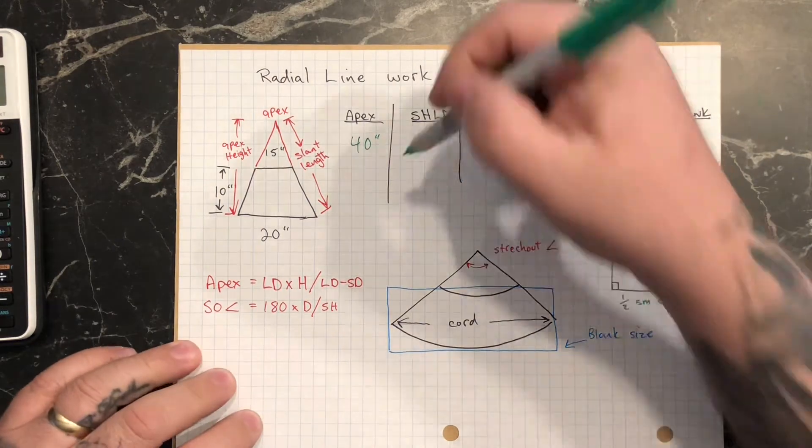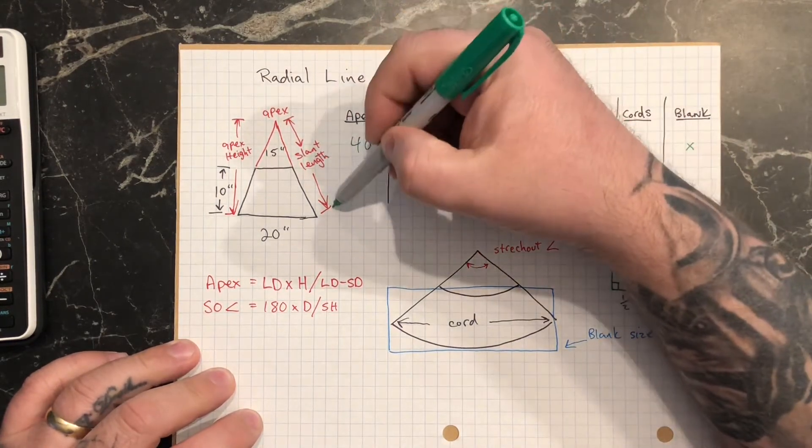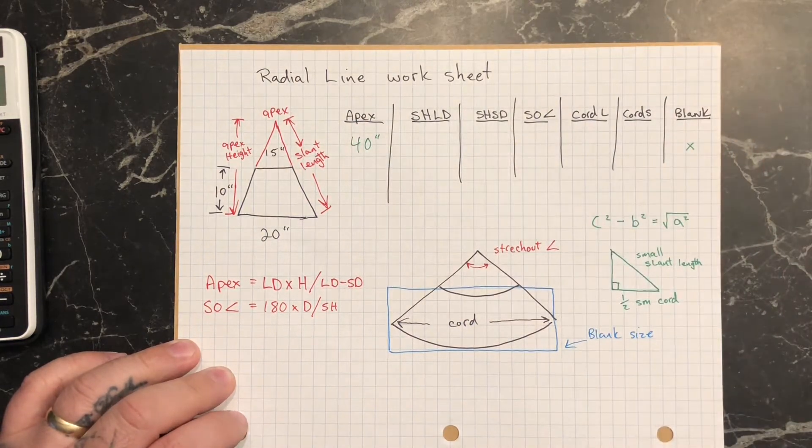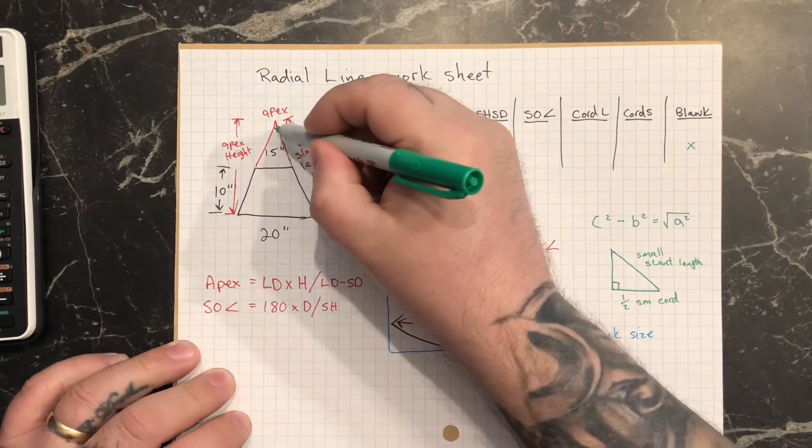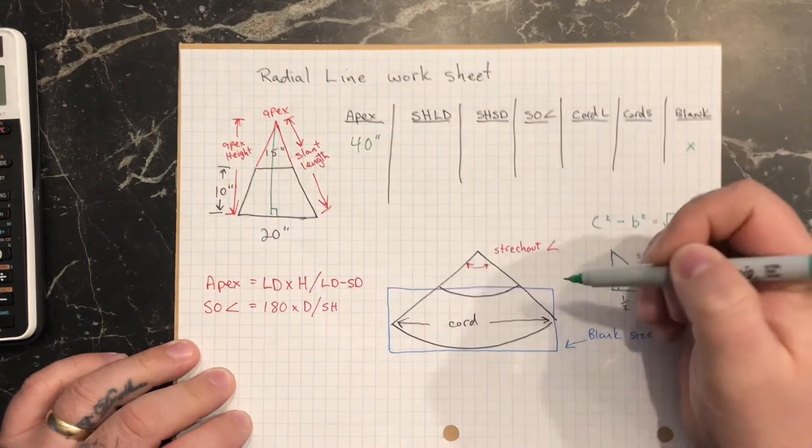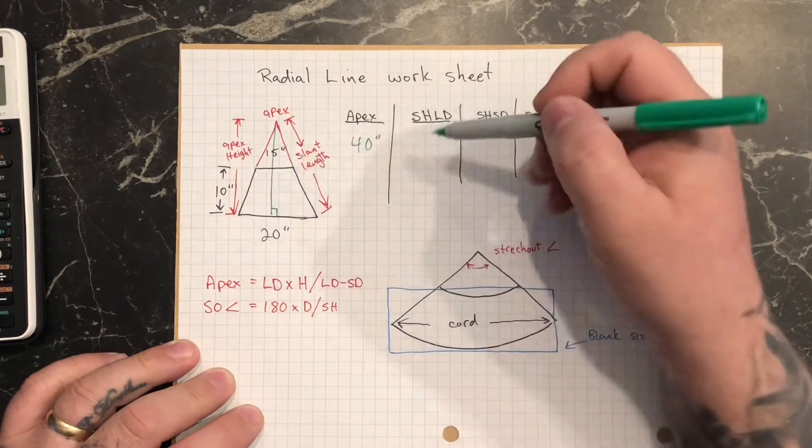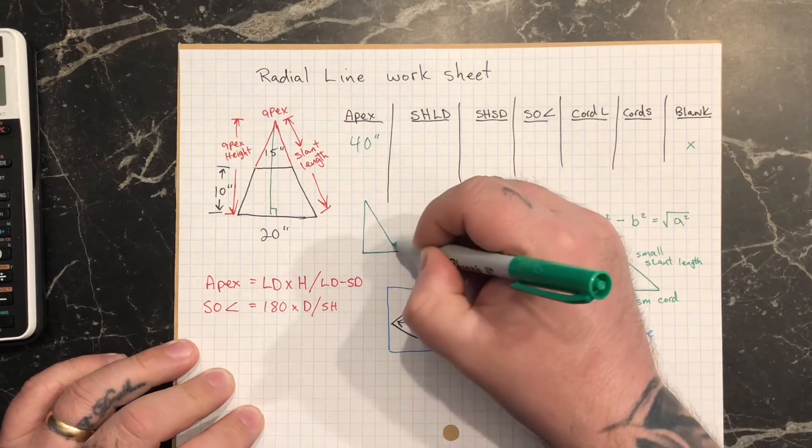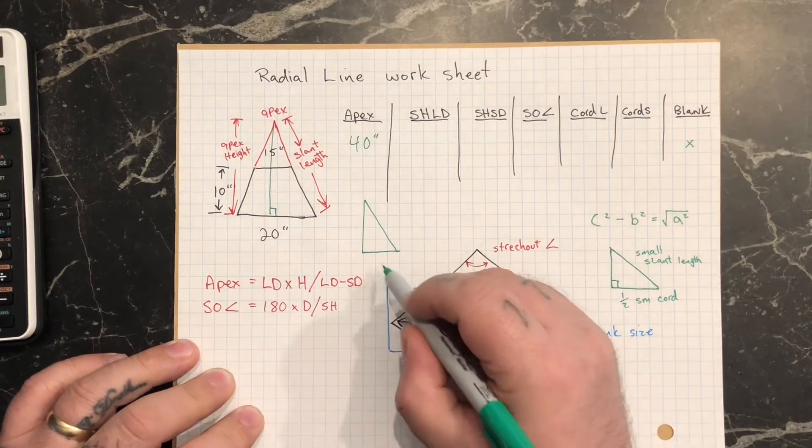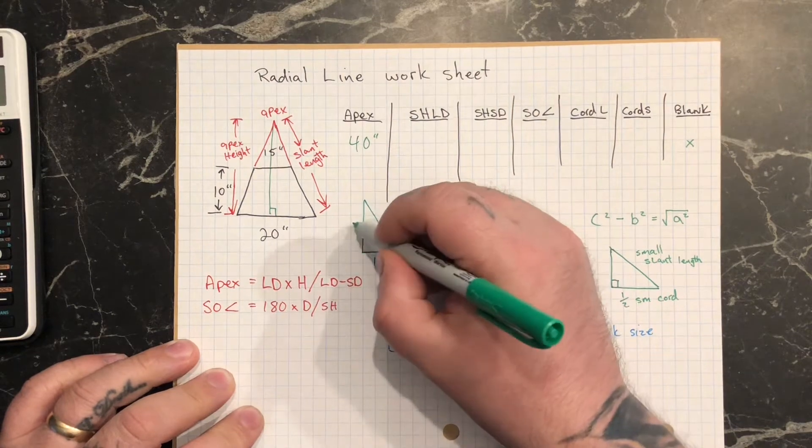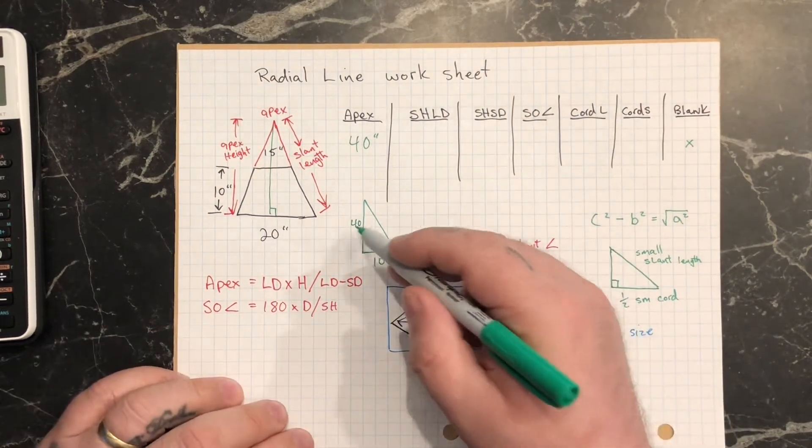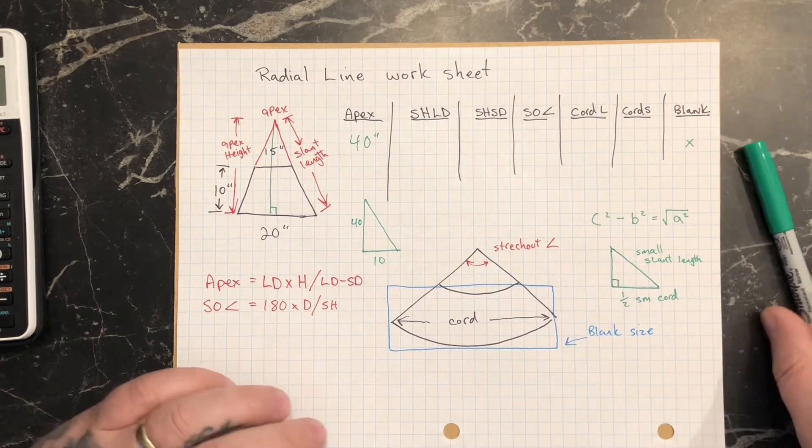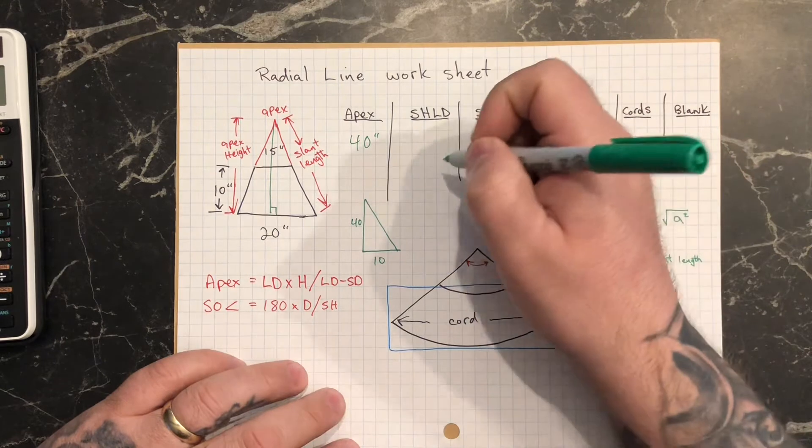Then we have the slant height for large diameter. So that's gonna be the slant height here. That's just a squared plus b squared equals c squared. So if I actually drew a triangle in there, I have an apex height now because that's what I figured out. The base of my triangle is gonna be 10 because it's half of the 20. The height here is gonna be 40. So it's gonna be 10 squared plus 40 squared is gonna give me the slant height. And that ends up being 41 and a quarter.